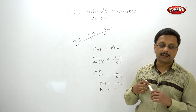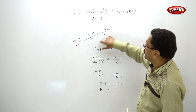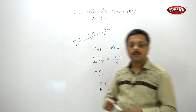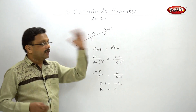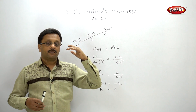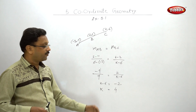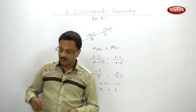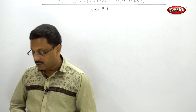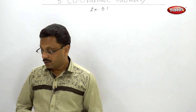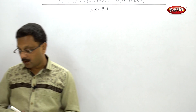Very simple — extremely simple example. You can do the rest by yourself. This is how, when three collinear points are given and one coordinate is missing, you find the unknown value. Let us go ahead to Example 5: show that four given points are vertices of a parallelogram.